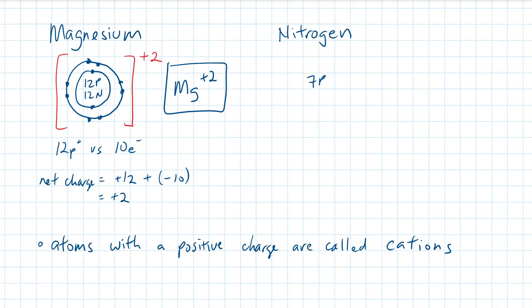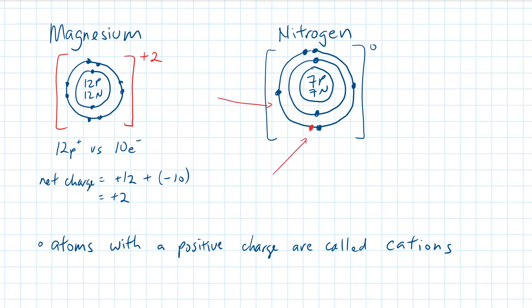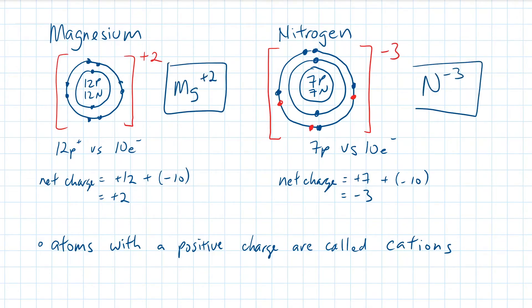A neutral nitrogen will have seven protons and seven neutrons. With five valence electrons, it is far easier to find three more electron buddies than to get rid of five. By the time the nitrogen has found its extra electron friends, it will have seven protons versus ten electrons, or a net charge of negative three. We can write that as N and a small negative three written in superscript. Negative ions are known as anions.